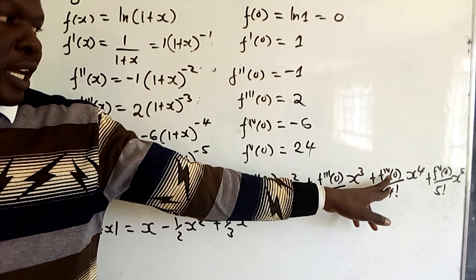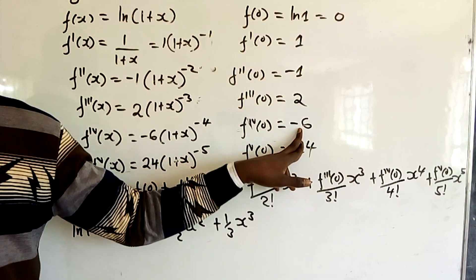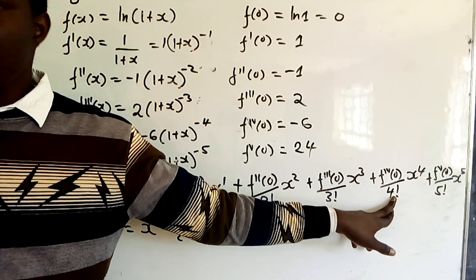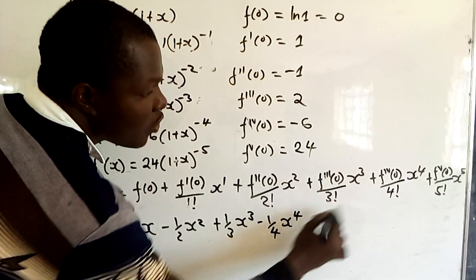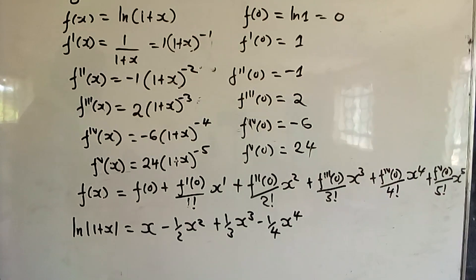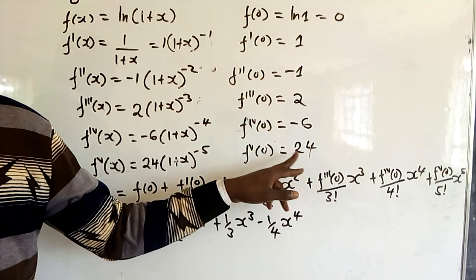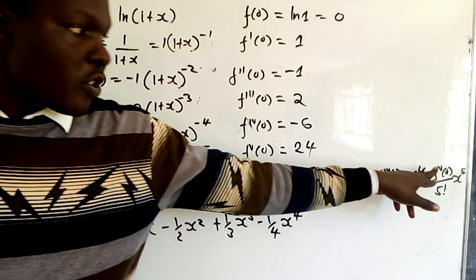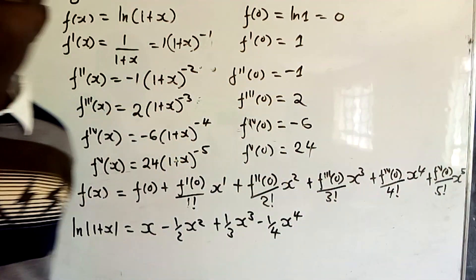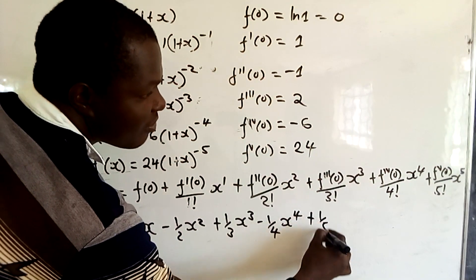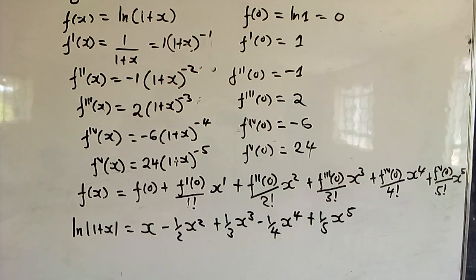The fourth derivative of f(0) = -6: so -6 over 4 factorial = -6/24 = -1/4, giving -(1/4)x⁴. The fifth derivative of f(0) = 24: so 24 over 5 factorial = 24/120 = 1/5, giving +(1/5)x⁵.